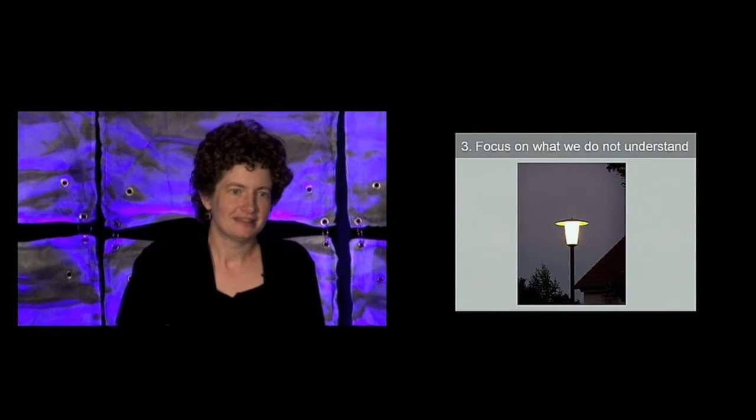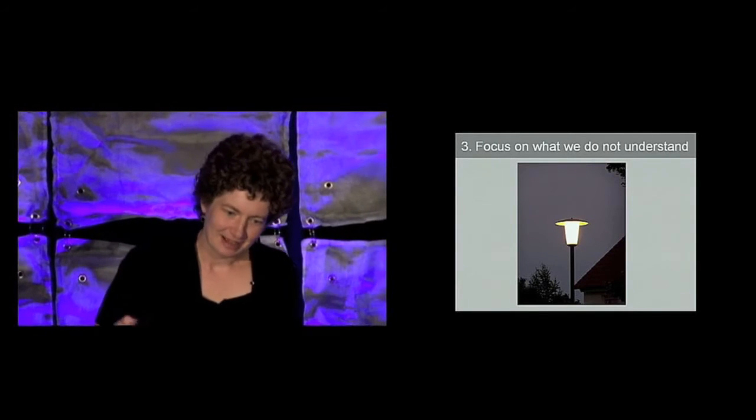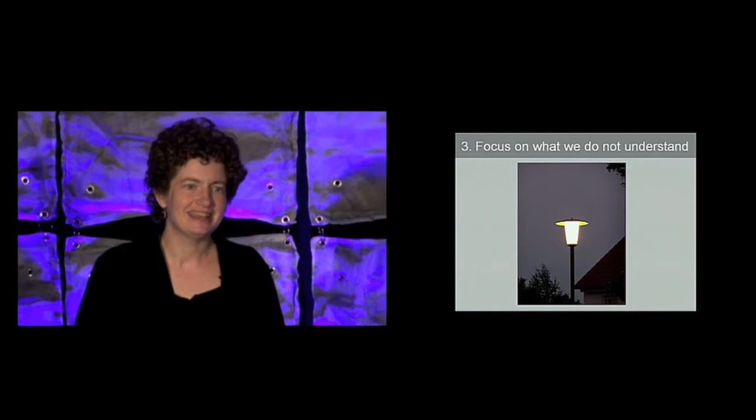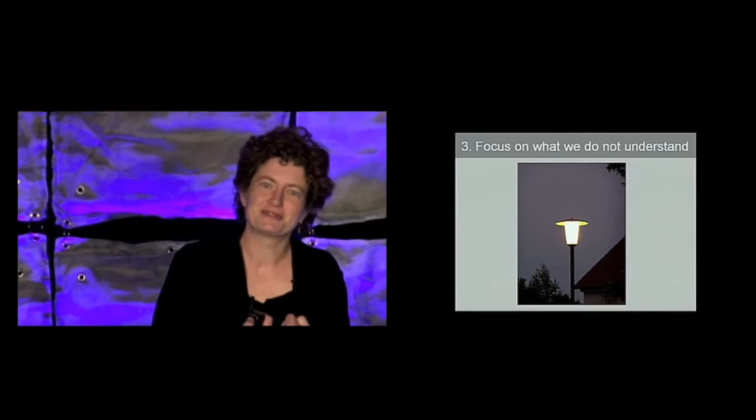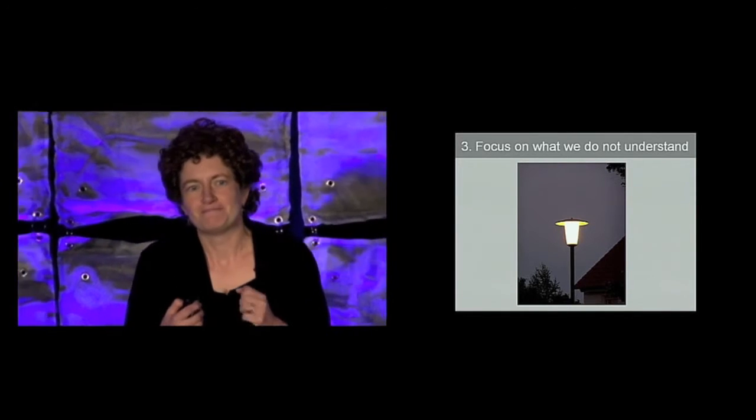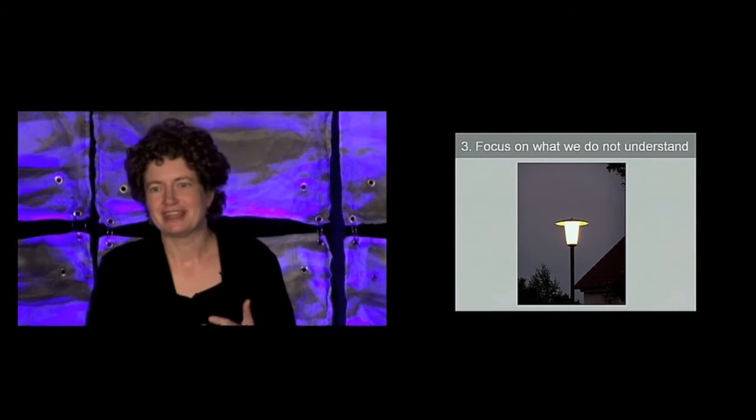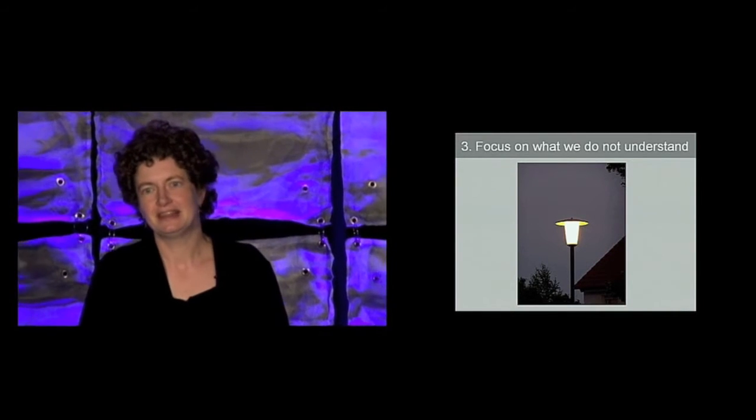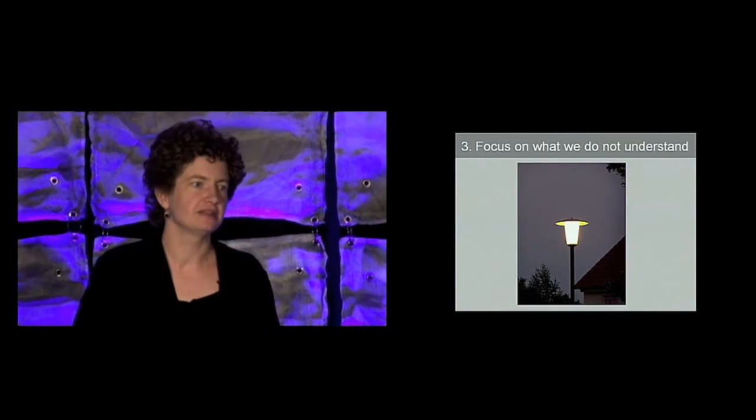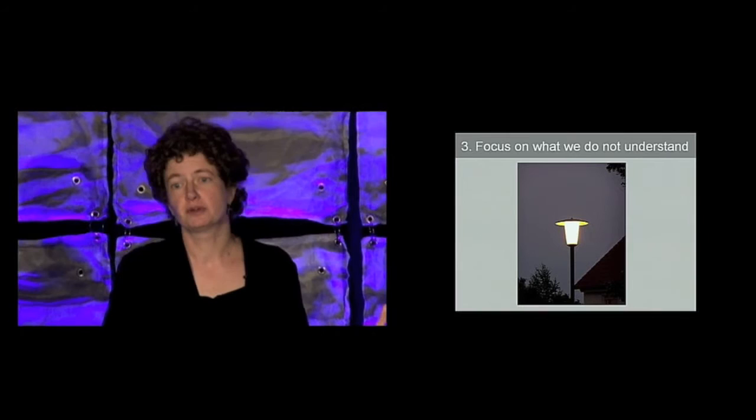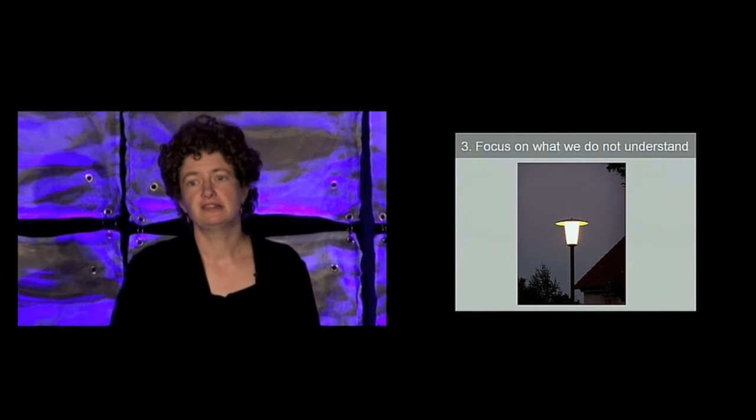And the policeman says, I don't see any keys here under the street light. And the drunk man says, I'm sad to tell you I also don't see any keys, but it's really the only place I can look. And I think as scientists we kind of cringe when we hear this because we know that some of us engage in a little bit of street light looking. We tend to look where things are most convenient and easy. And the hard thing is to push ourselves to look outside of the boundaries of the street lights light. Because that's where research is really risky and that's where research most needs to be supported.